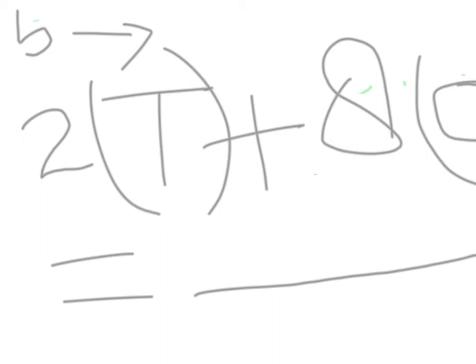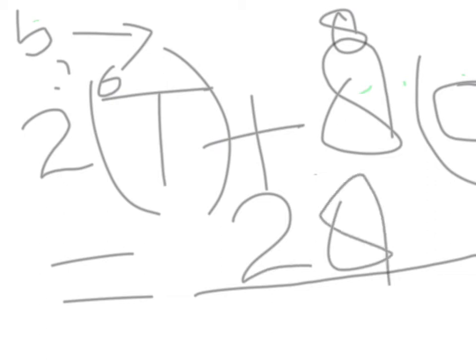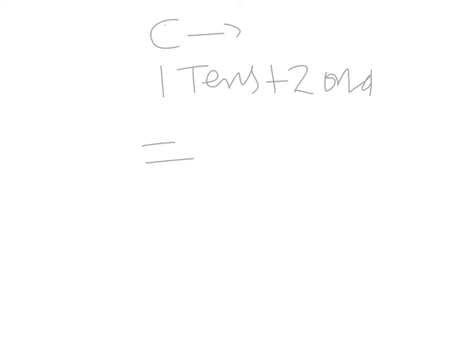Part b is two tens plus eight ones. Two tens equal twenty and eight ones equal eight, so twenty plus eight equals twenty-eight. Two tens plus eight ones equal twenty-eight.